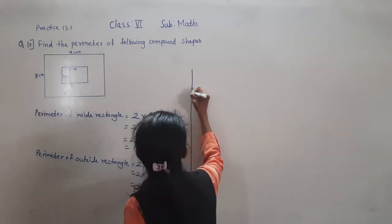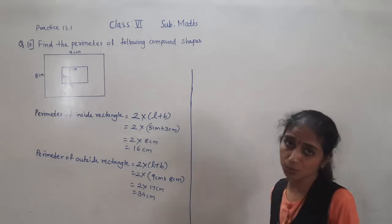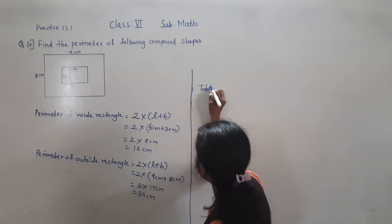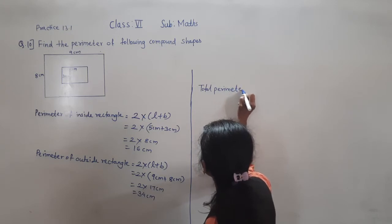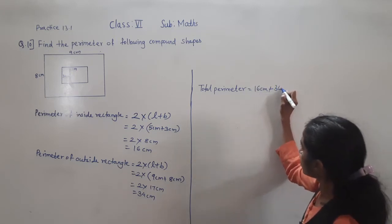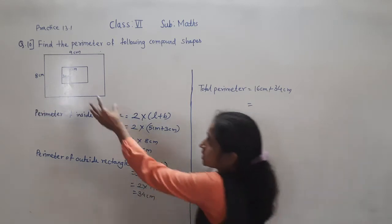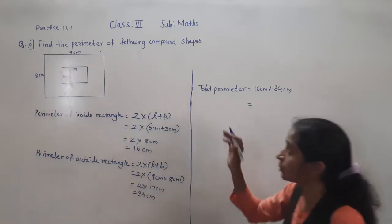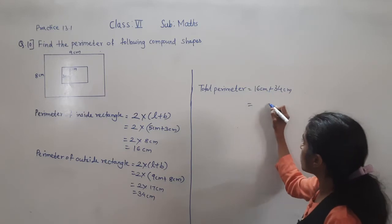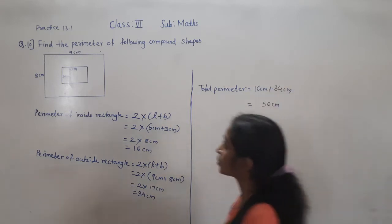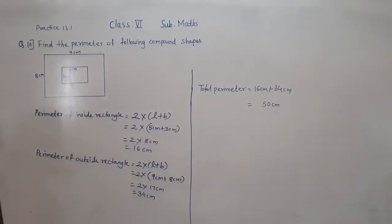So what we have to find? We have to find the total perimeter of this figure. Total perimeter equals perimeter of inside figure plus perimeter of outside figure: 16 cm plus 34 cm. So 6 plus 4 is 10, carry 1; 3 plus 1 is 4, plus 1 is 5. So total perimeter of this compound figure is 50 cm.